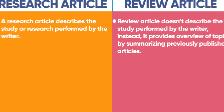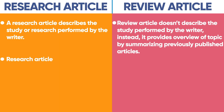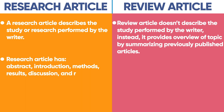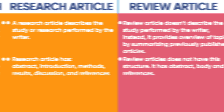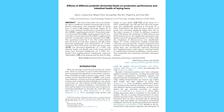A research article has abstract, introduction, methods, results, discussion, and references, whereas review articles do not have this structure. They have abstract, body, and references. The body could have many topics and subtopics.